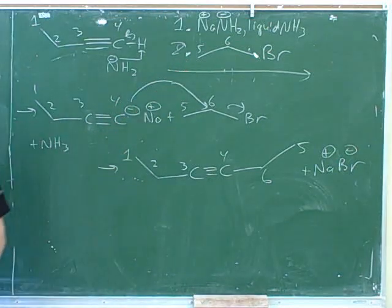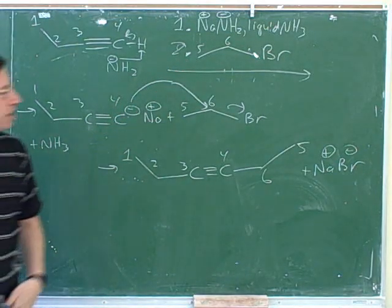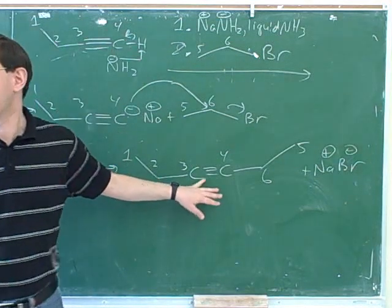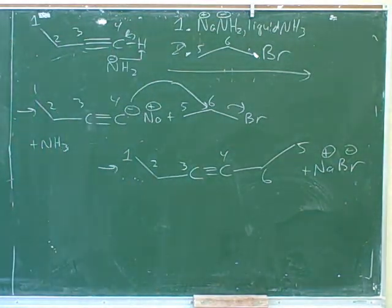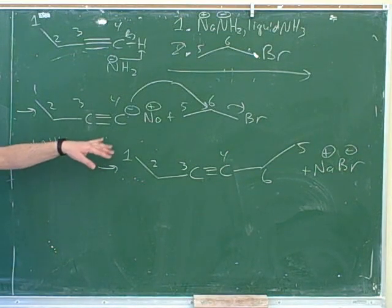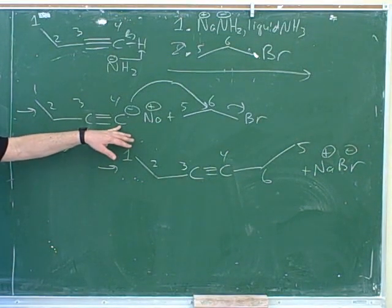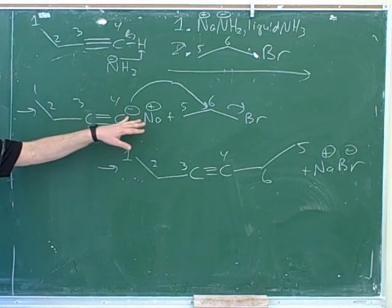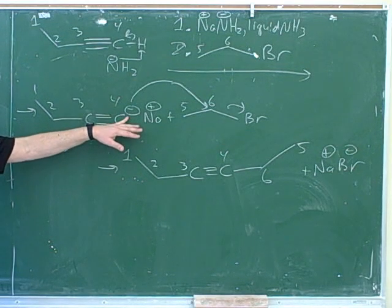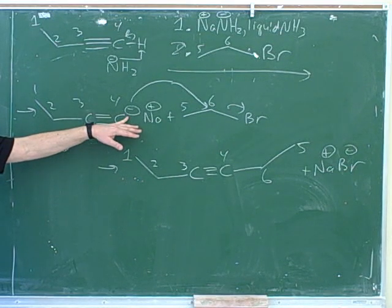If the product has a triple bond and more carbons than we started with, maybe we deprotonated the alkyne and then went through this reaction. It wouldn't work with an alkene because it's only the fact that the carbon is SP hybridized that makes it electronegative enough to stabilize the negative charge. So it wouldn't work with an alkene or an alkane. That's why this is the first time we've learned about this type of reaction, now that we're going over alkynes.